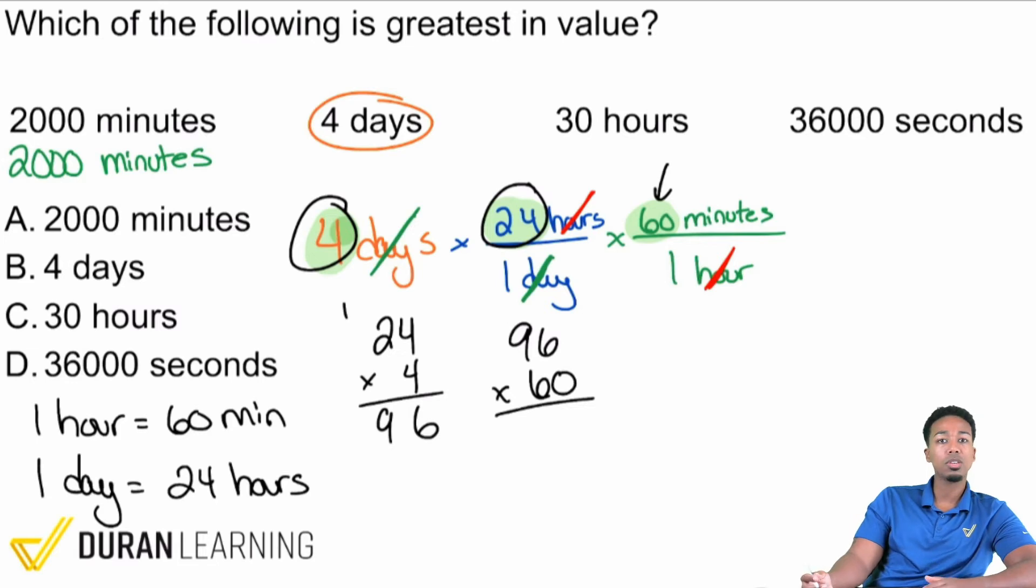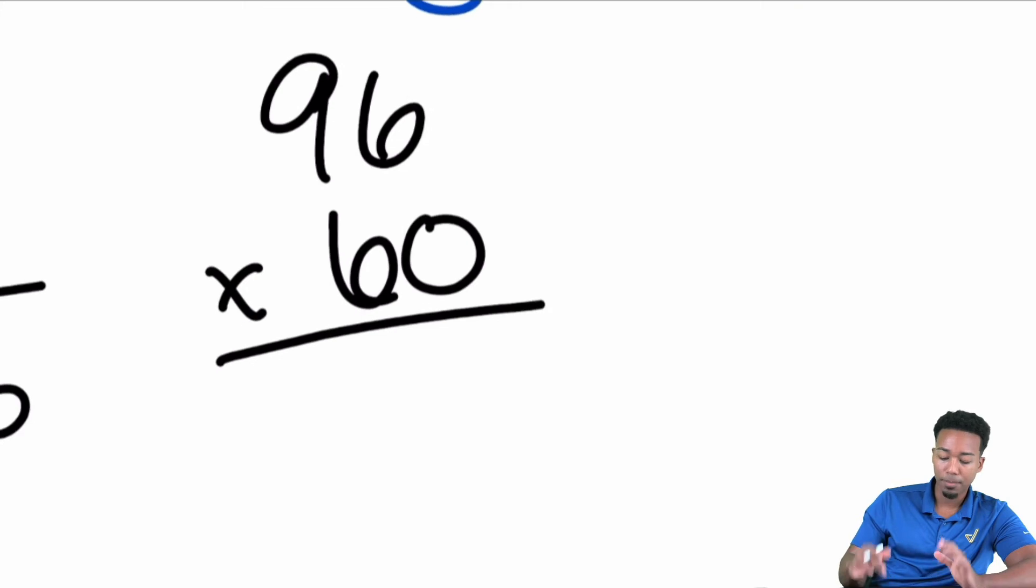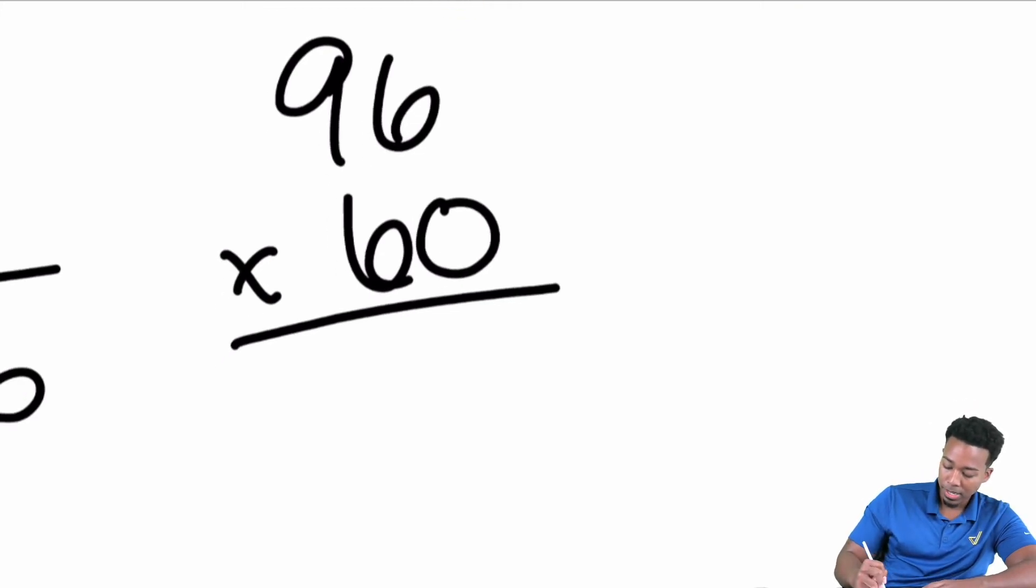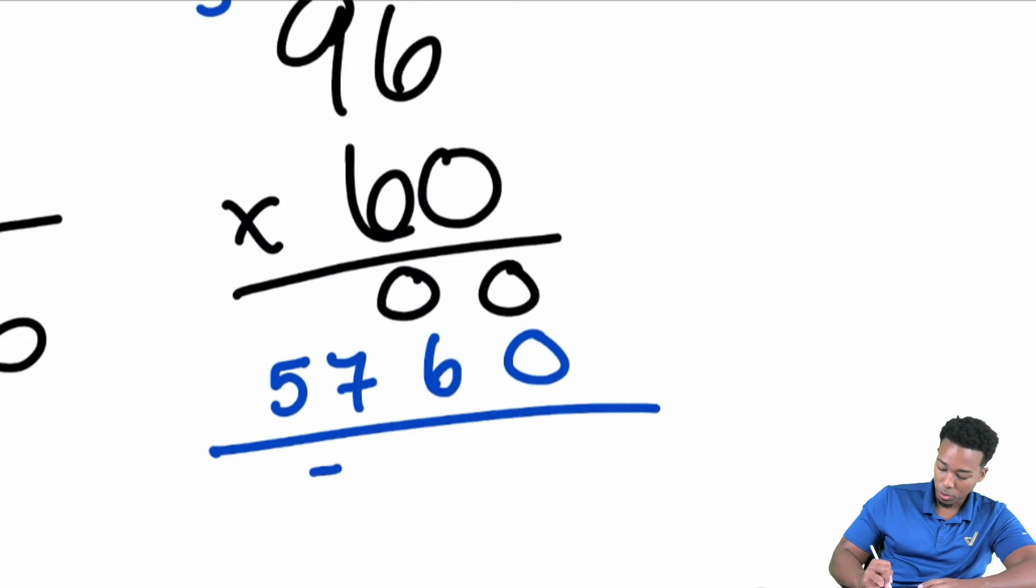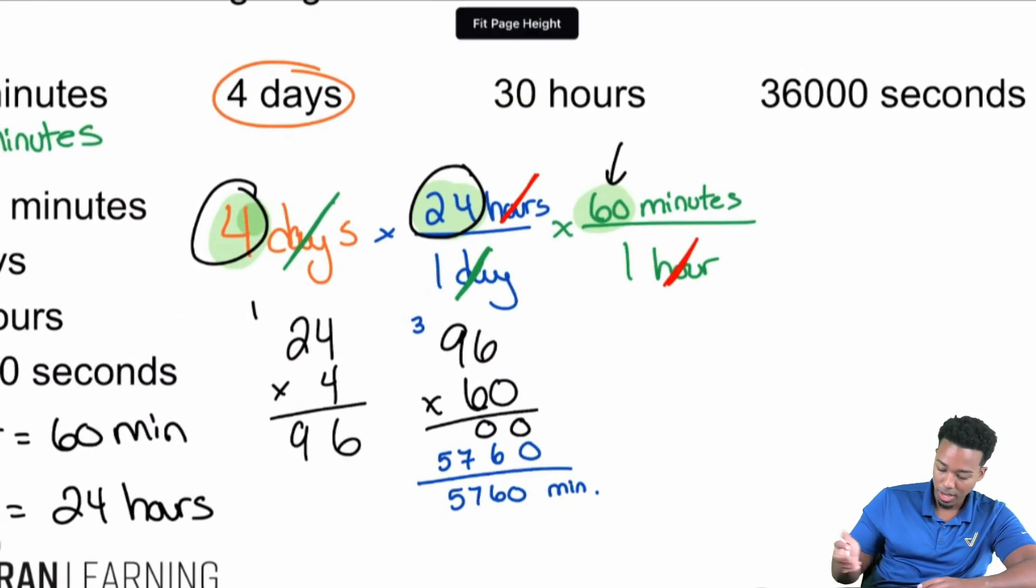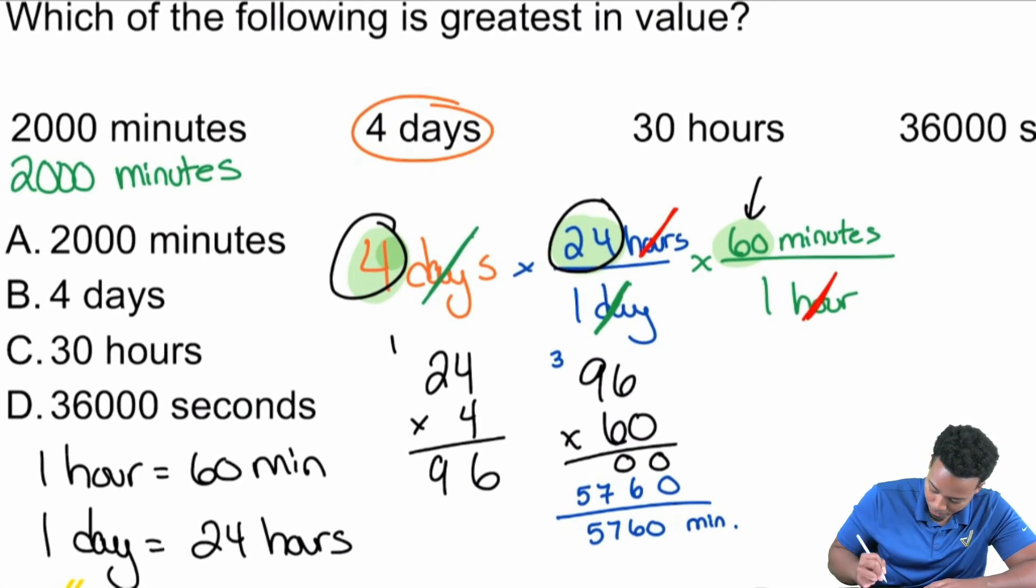Now we still have to multiply by 60, so 96 multiplied by 60. A shortcut way to do this would be to just multiply by 6 then tack the 0 on at the end, but if you're not sure how to do that, don't worry. 6 times 6 is 36, 9 times 6 is 54, carry the 3, 57. The answer will be 5,760 minutes. So right there, four days is going to be 5,760 minutes.